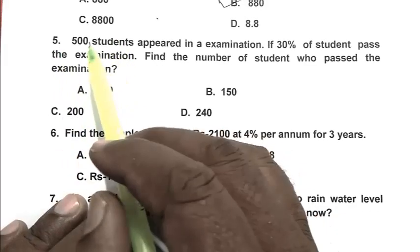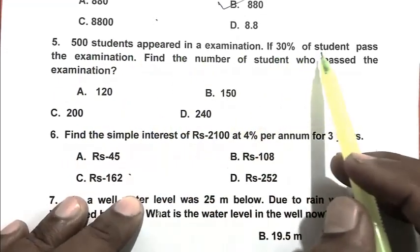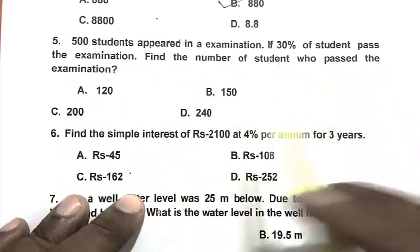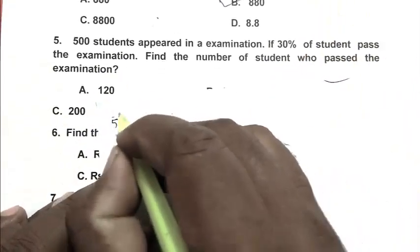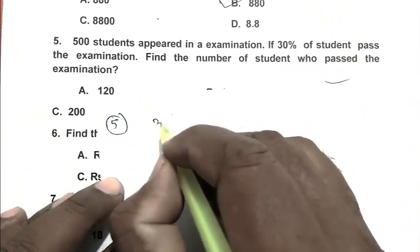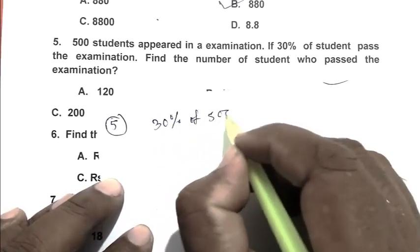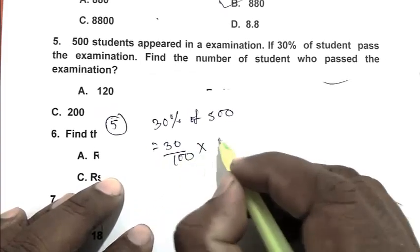Question number 5: 500 students appeared in an examination. If 30% of students pass the examination, find the number of students who passed the examination. We calculate 30% of 500, that is 30 by 100 multiplied by 500, we get 150. So B is the right answer.